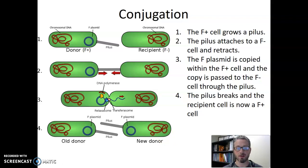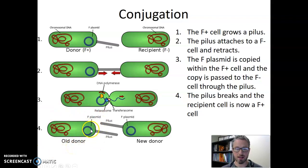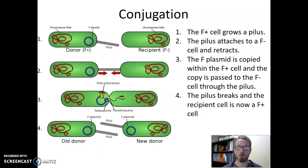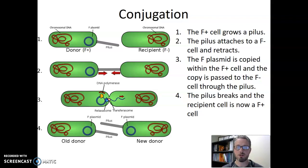During conjugation, the recipient cell changed from F minus to F plus because it gained the F plasmid. The donor cell does not change at all — it still retains its F plasmid and retains the ability to make a pilus, so it can continue to perform conjugation with more cells and transfer the plasmid into more recipient cells. That's conjugation: the F plasmid is copied from the donor to the recipient cell, and we create a new F plus cell from that recipient.